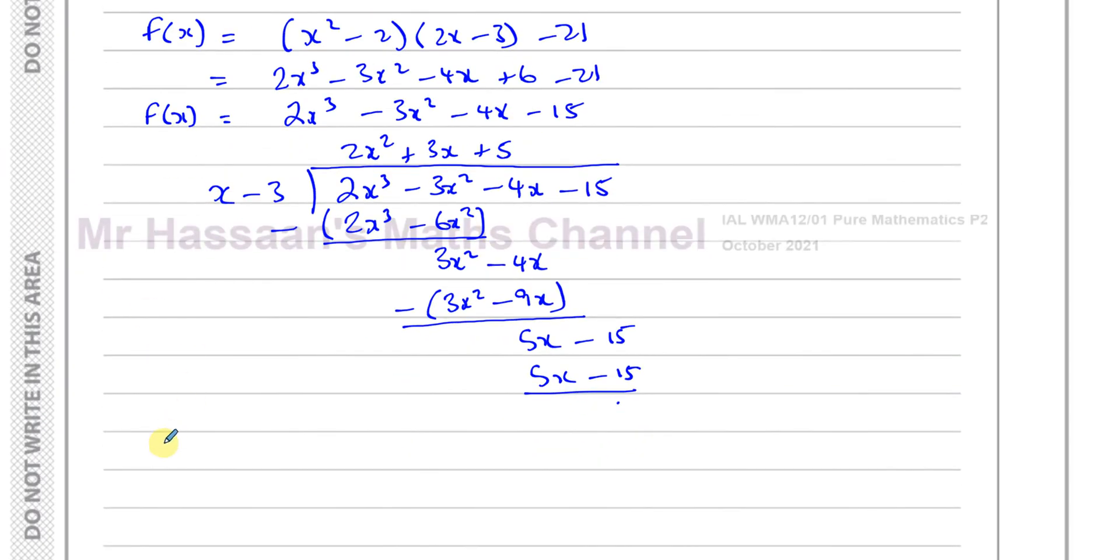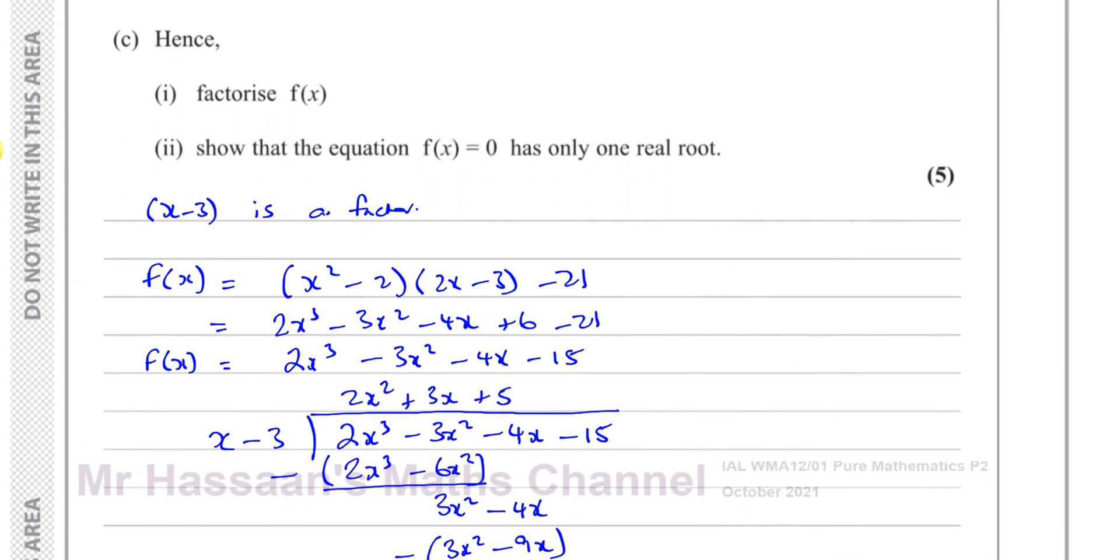We can say that f(x) can be expressed now as x minus 3 multiplied by 2x squared plus 3x plus 5. Because if you divide this by x minus 3 and you get no remainder, not only is x minus 3 a factor, but this is also a factor what you get. The quotient is also a factor. That's factorizing up to a certain point.